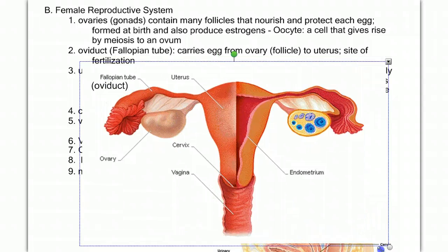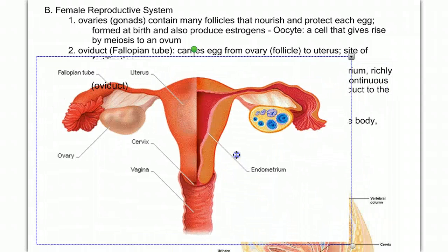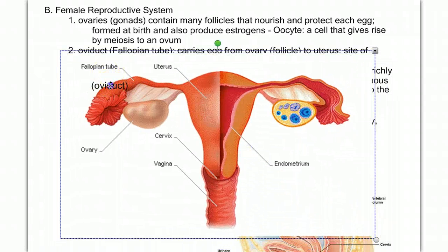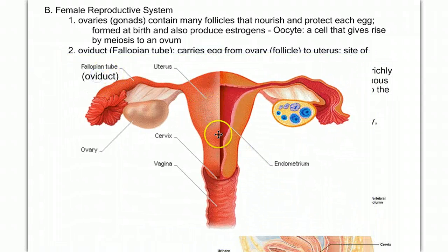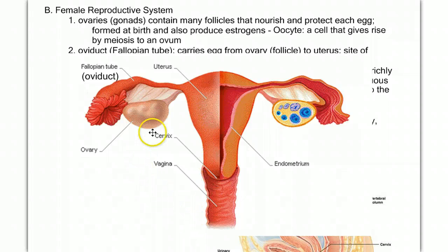The oviduct, the uterus, and the vagina. It's in the ovaries where the eggs are housed, mature, and are released in a monthly cycle.